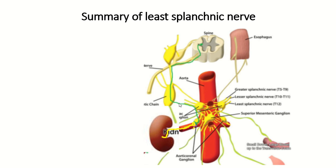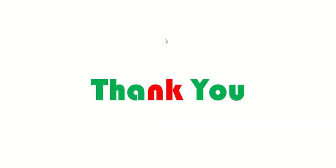In summary, the least splanchnic nerve conveys two types of fiber: the preganglionic sympathetic fiber and the general visceral afferent fiber. The nerve itself is the medial branch from the sympathetic ganglion, and this defined portion is known as the least splanchnic nerve. That is all about the least splanchnic nerve. If you like this video, please press the like button and subscribe to my channel.